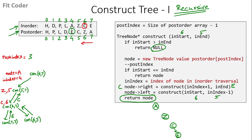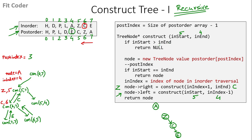Control goes back to construct(5, 7) where the node was Z. Construct(6, 7) returned C, so right of Z becomes C and we link these nodes. Then we call for the left of Z with construct(5, 4). Since inStart is 5 and inEnd is 4, start is greater than end, so we return null. This function call returns null, and construct(5, 7) ends. Control goes back to construct(0, 7) where the node was A. Construct(5, 7) returned Z, so right of A becomes Z and we link these nodes.